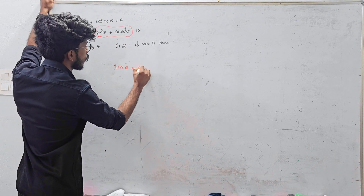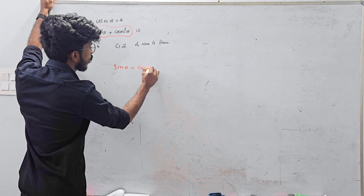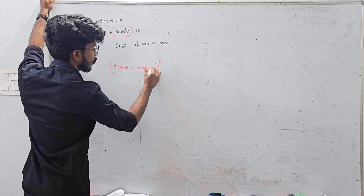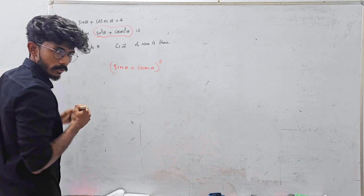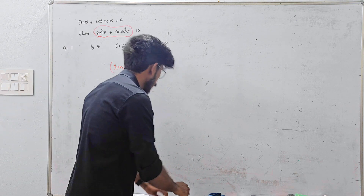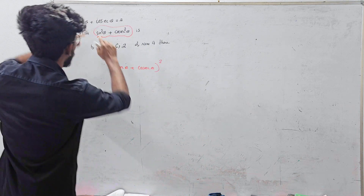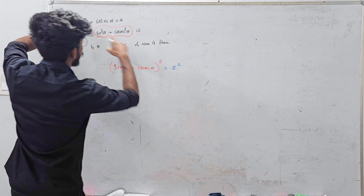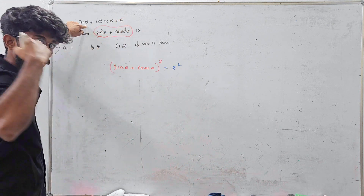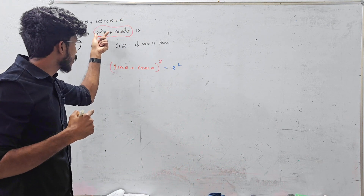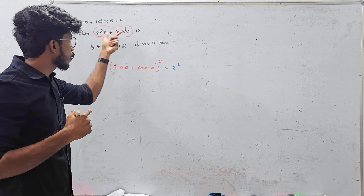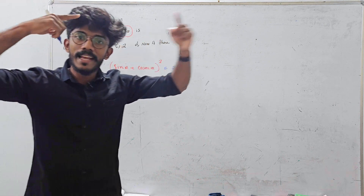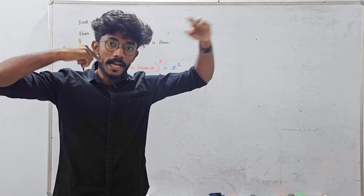Sin theta plus cosine theta — what is sin theta plus cosec theta? You need to know the whole square. This is the whole square because the question equals 2. There is a square here and on the other side. That is a whole square because there is a whole square more than sine-squared. So a plus b whole square equals a squared plus 2ab plus b squared. That is one idea.